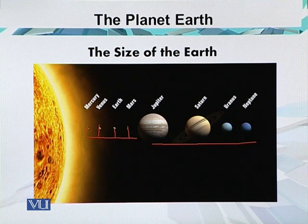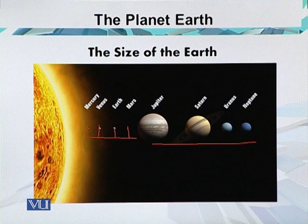Mercury has an average distance from the sun of about 58 million km, Venus has 108 million km, Earth has 150 million km, and Mars has a distance from the sun of 228 million km.